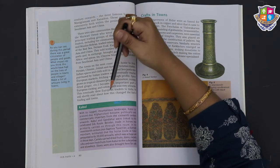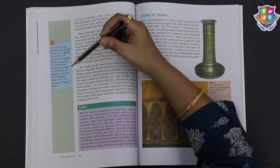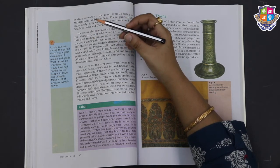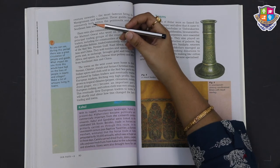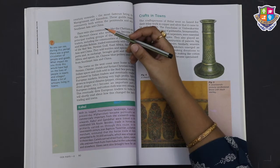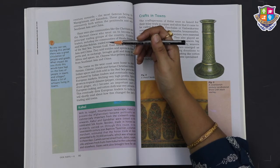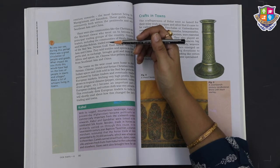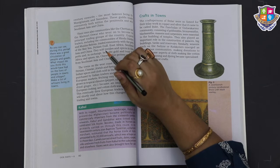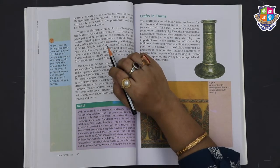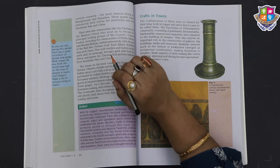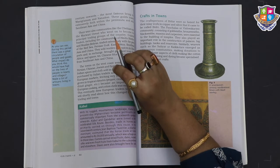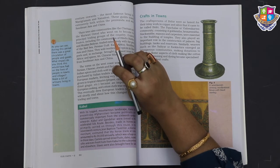Indian spices and cloth sold in the Red Sea ports were purchased by Italian traders and eventually reached European markets, fetching very high profits. Spices grown in tropical climates - pepper, cinnamon, nutmeg, dried ginger, etc. - became an important part of European cooking and cotton cloth was very attractive. They eventually drew European traders to India. We will shortly read about how this changed the face of trading and towns. The craftsperson of Bidar was very famous. The inlay work in copper and silver came to be known as Bidri.